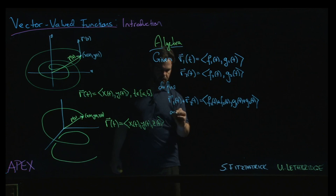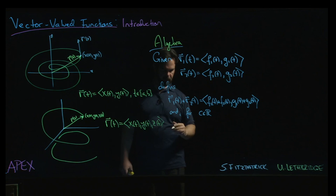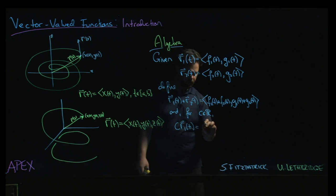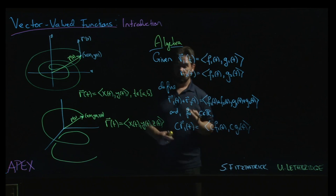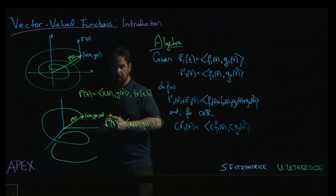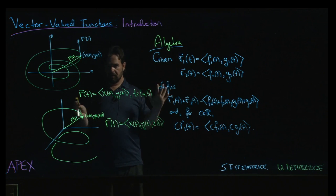And if you have some scalar c, some real number, some constant, we can define c times r1 by just c times f1 of t and c times g1 of t. So we can do addition and scalar multiplication with vector-valued functions in exactly the same way that we do addition and scalar multiplication with vectors.